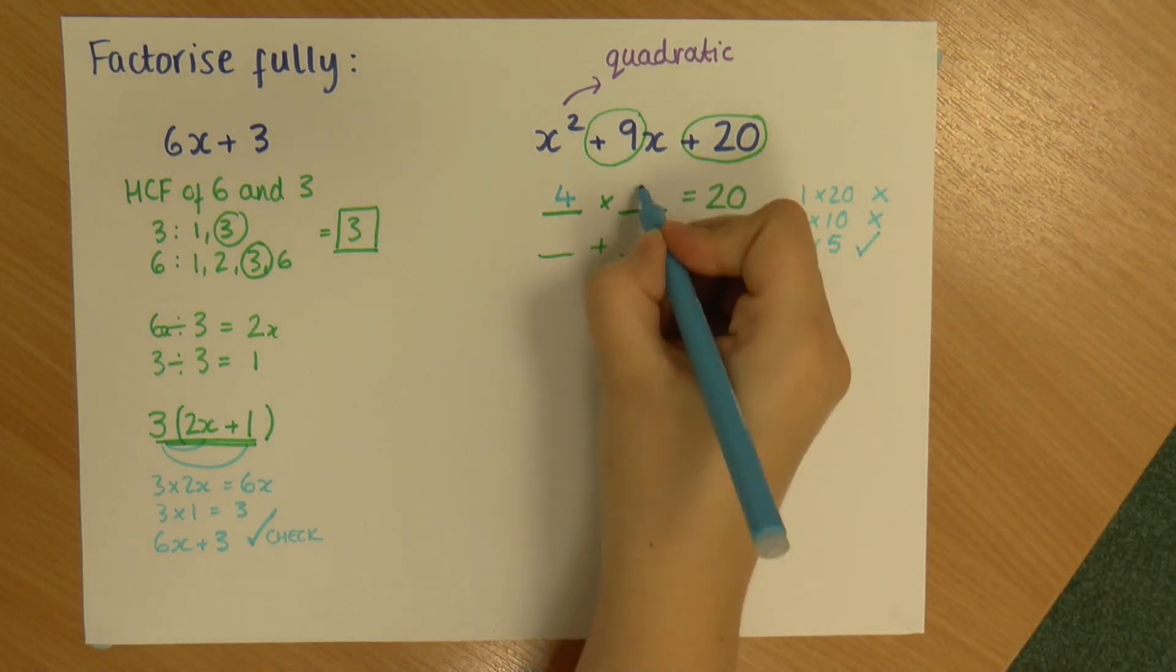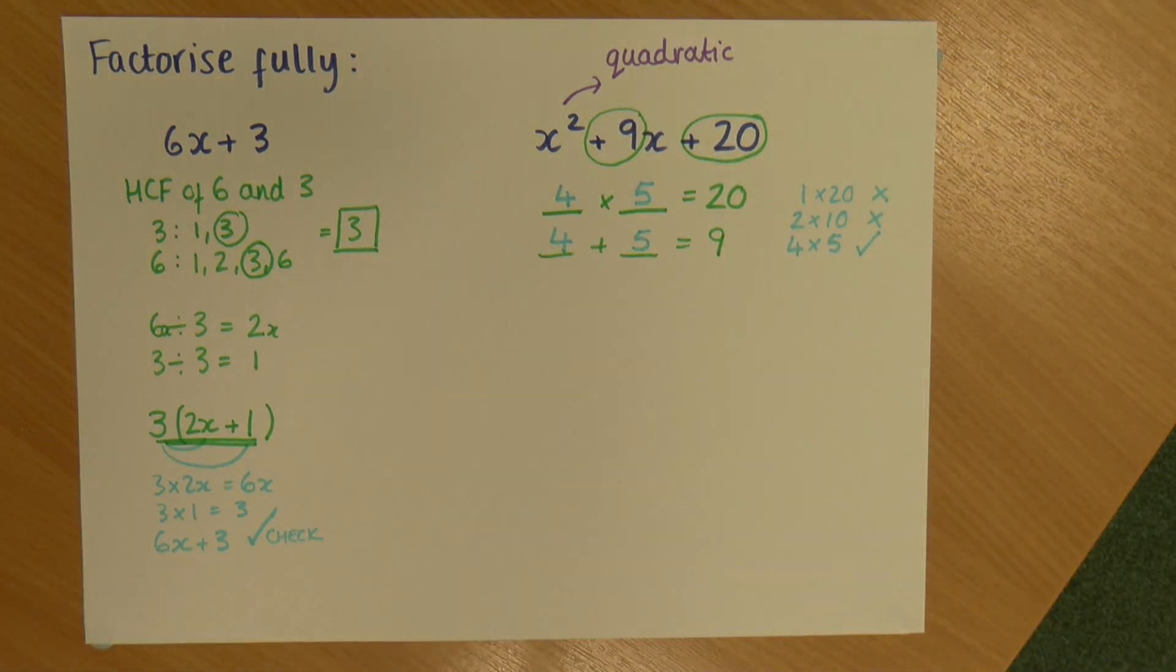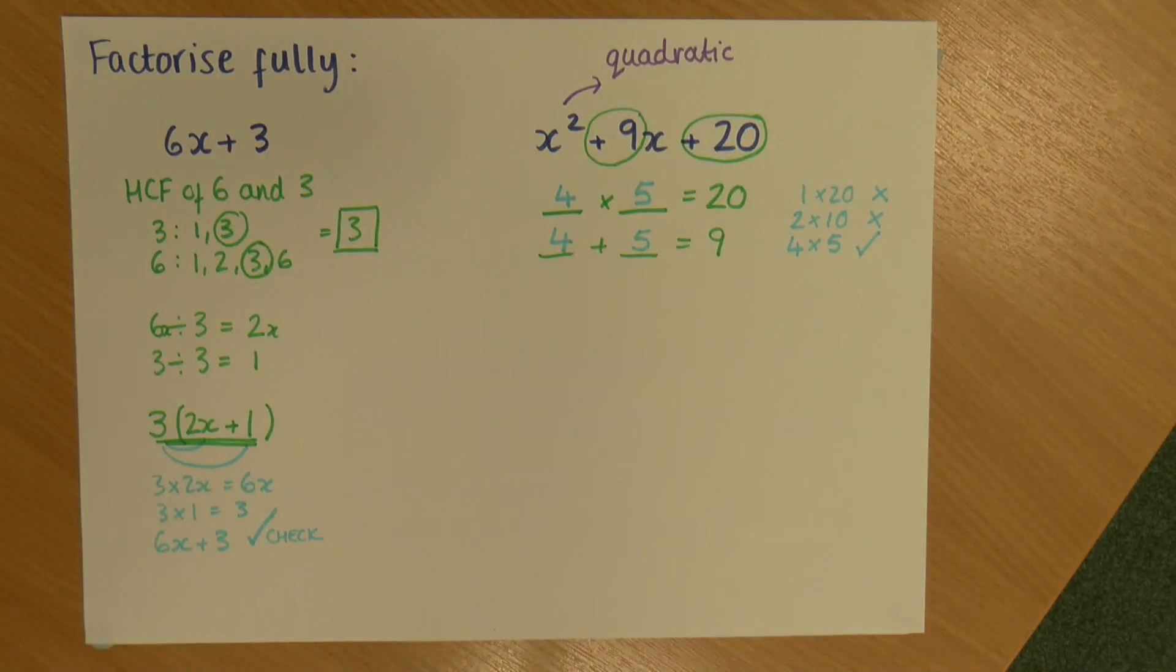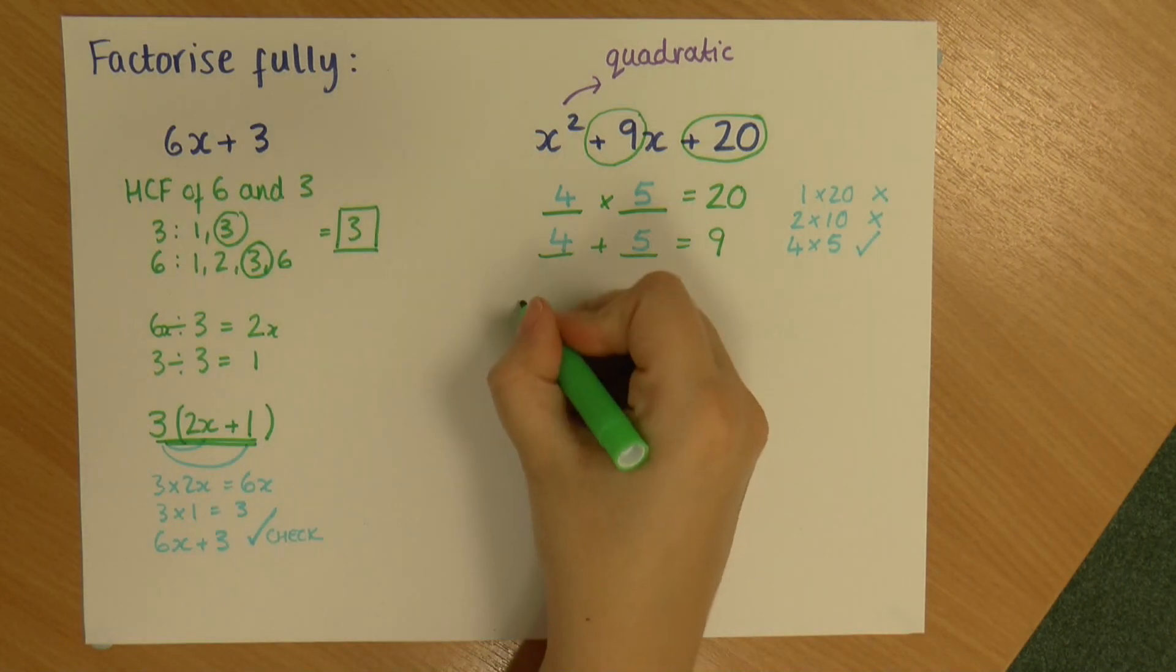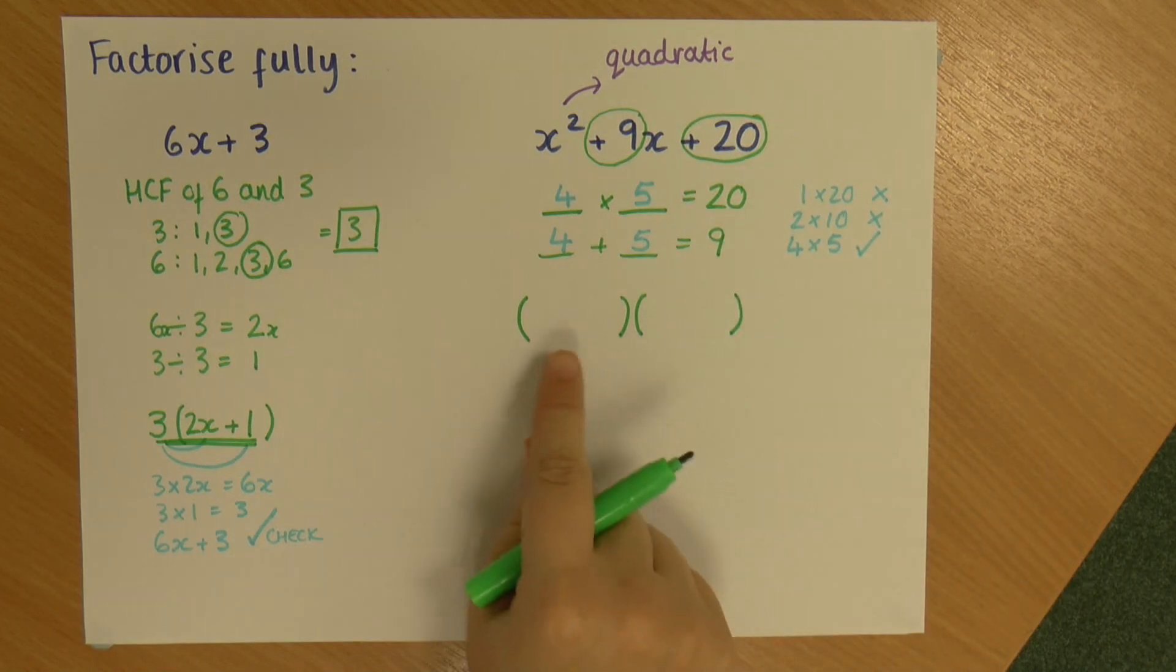So 4 times 5 is 20. 4 add 5 is 9. So I've now got my pair of numbers. And what I do with those is again I can set up some brackets, and with quadratics I will have 2 lots of brackets.